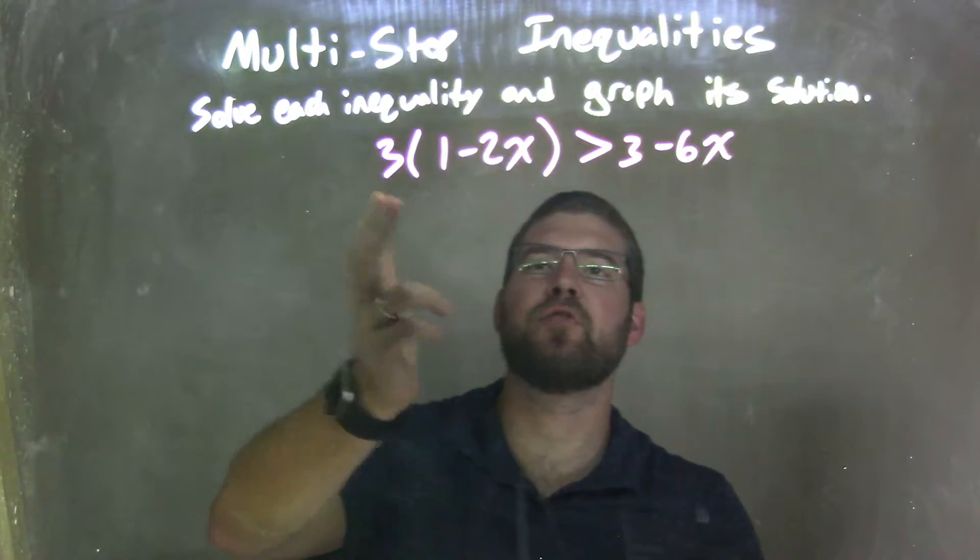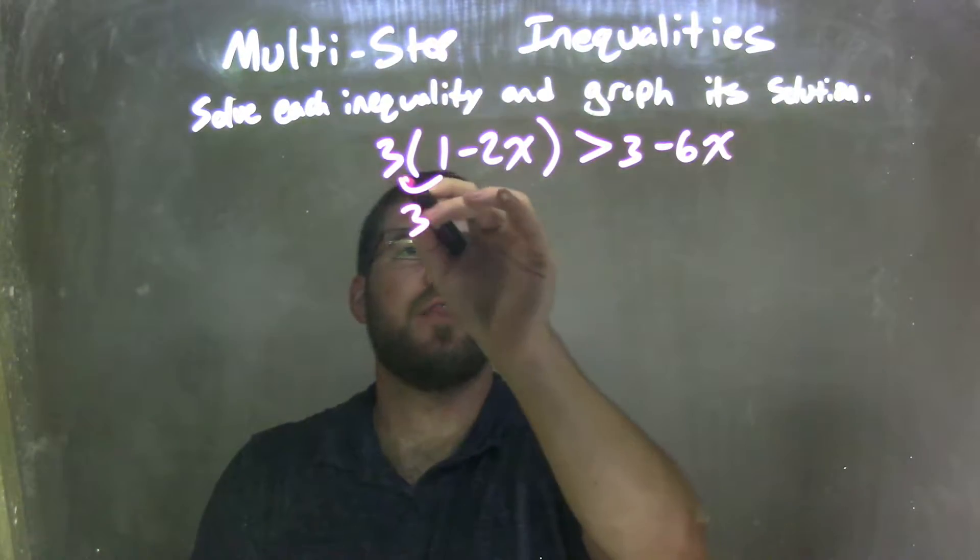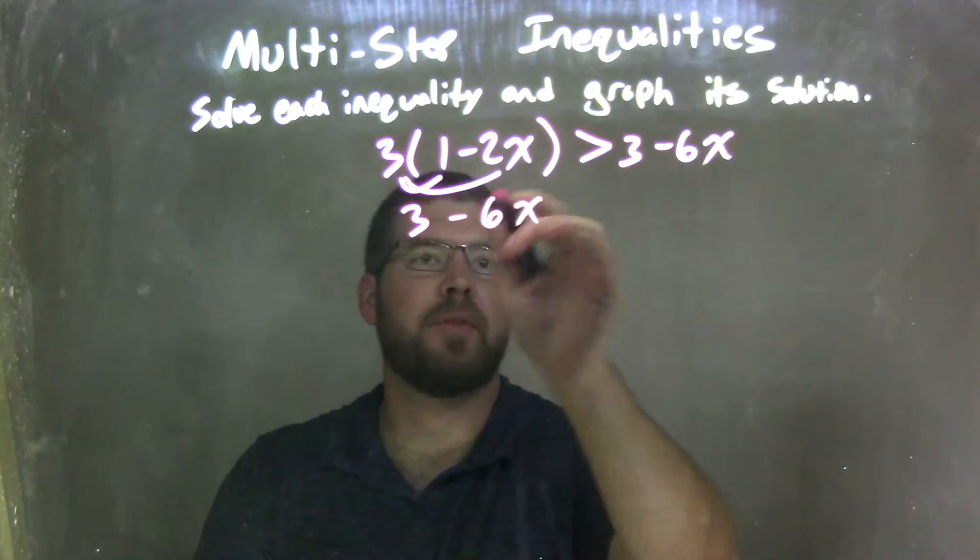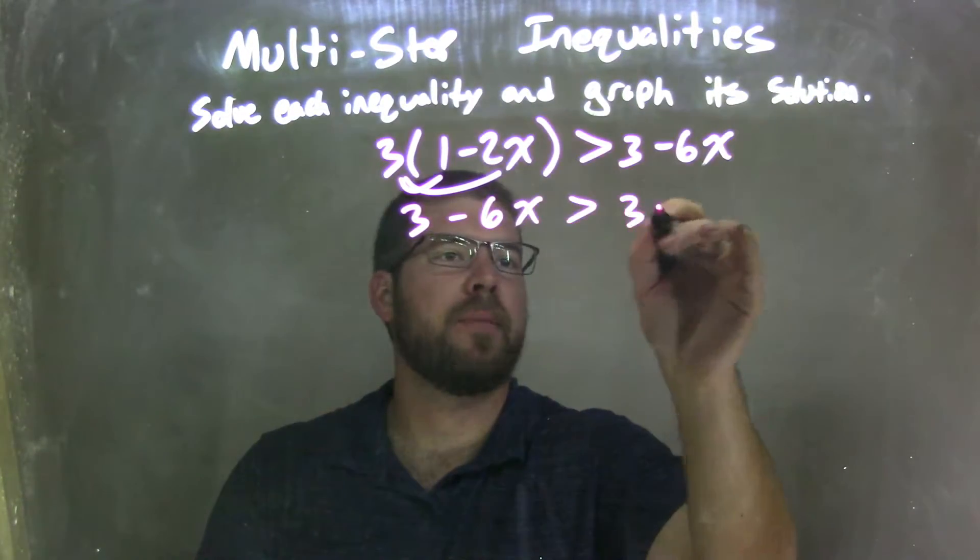Well, my first step is I want to distribute that 3 across. So 3 times 1 is 3, and 3 times a negative 2x is a negative 6x here. Distribute 3 across is greater than 3 minus 6x.